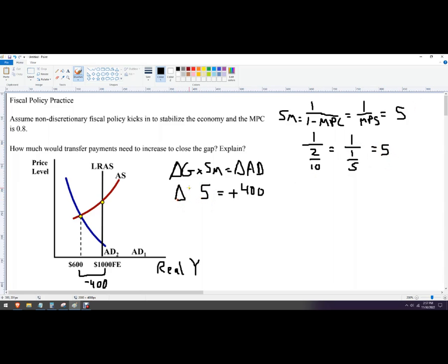The change in government spending. So I want to divide both sides by 5. And then these guys will go away. The change in government spending, which is in transfer payments.